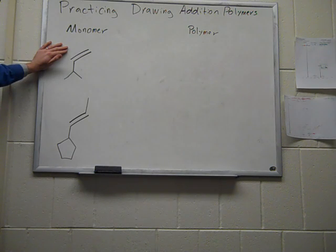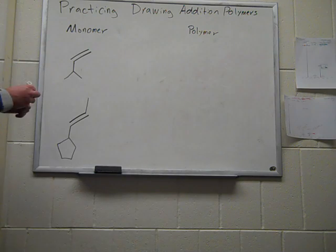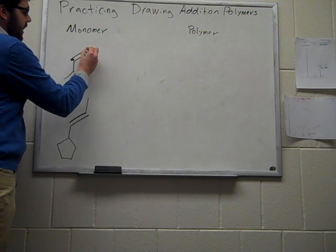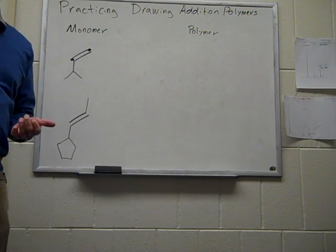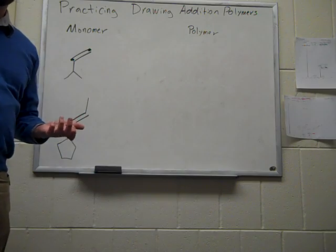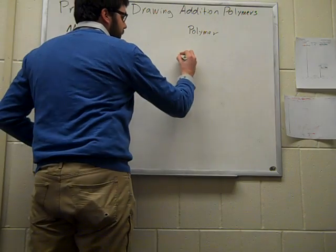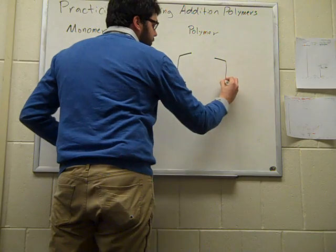So, when drawing an addition polymer, the first thing you want to do is focus on the two carbons that are making up your alkene, or your double bond. Then what you wind up doing is you draw a bracket, because remember,